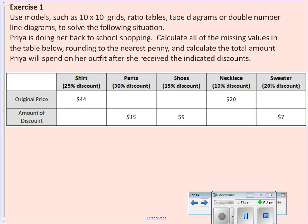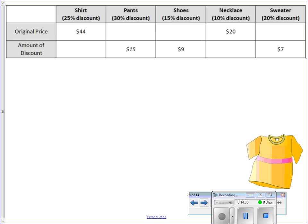Let's take a look at exercise 1. Back to school shopping, Black Friday sales, Christmas shopping. Lots of sales now. Here's a chart that Priya is doing, she's doing her back-to-school shopping. Let's calculate all of the missing values in the table below, rounding to the nearest penny. Let's just focus on finding the discount for each item. Let's start with our shirts and let's go all the way to the left below the table. Nice, neat, organized.